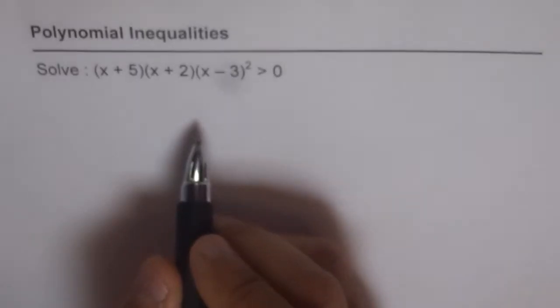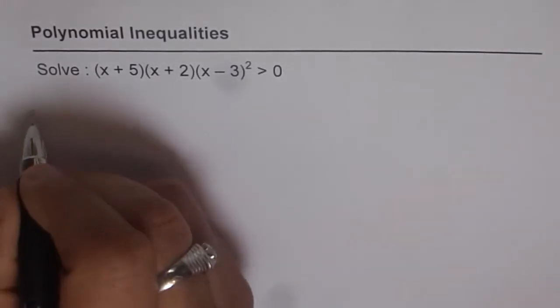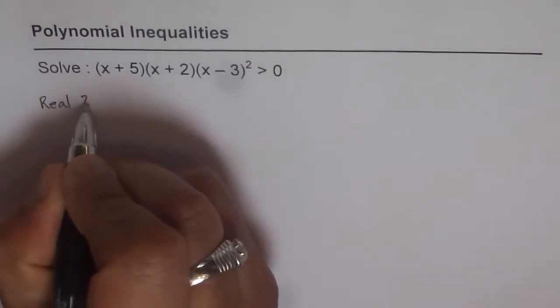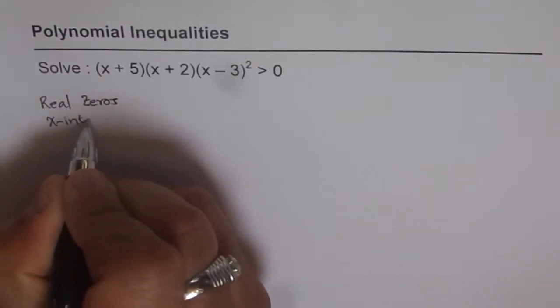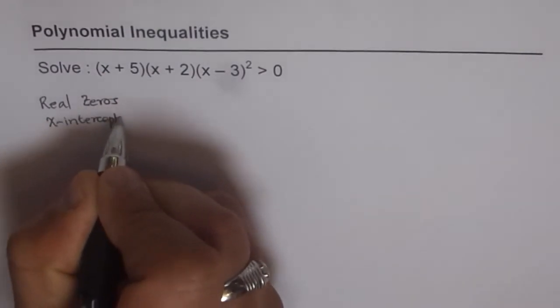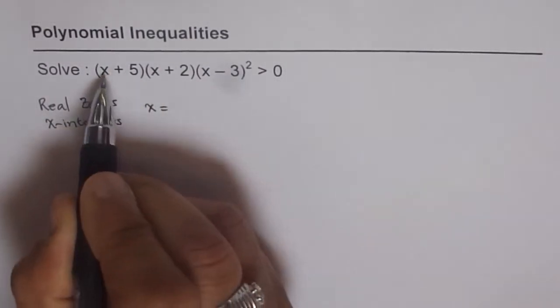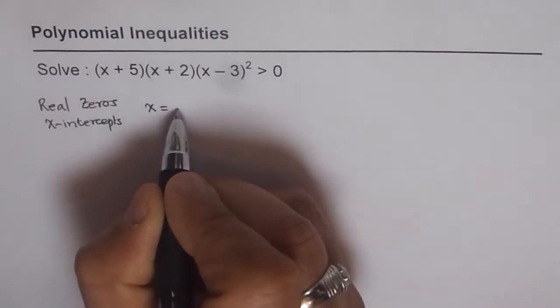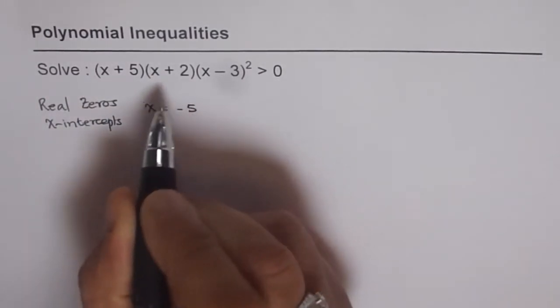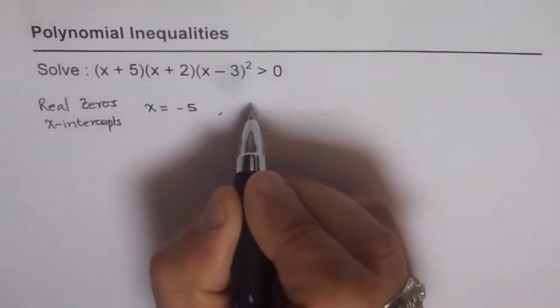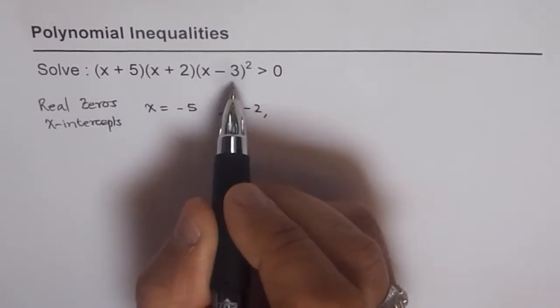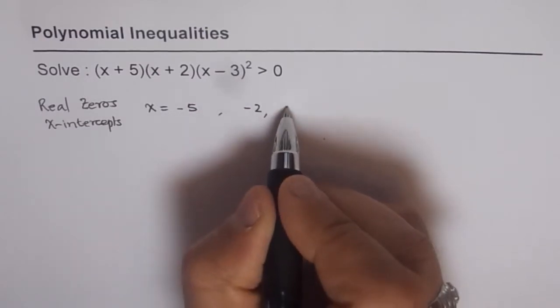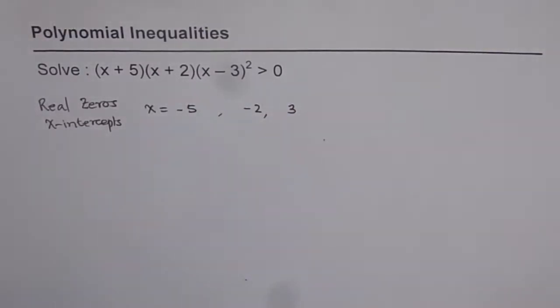So from the given equation, we can write the zeros, the real zeros I should say. So the real zeros or the x-intercepts are at x equals to minus 5, x plus 2 equals to 0 gives us a value of minus 2, and x minus 3 whole square will give us 0 at x equals to 3. Now let me show you how I got these values.